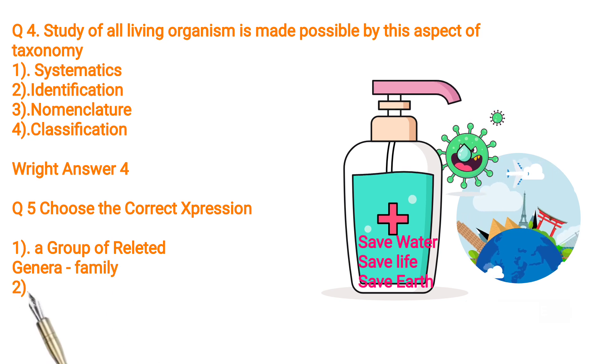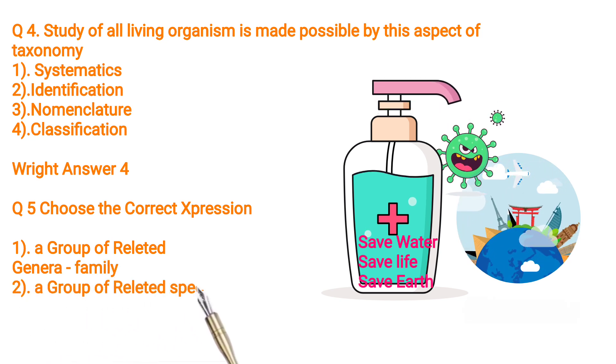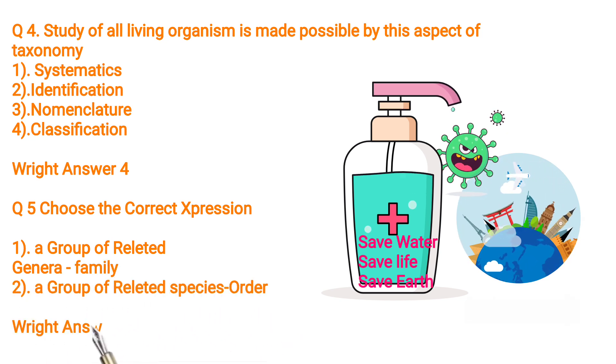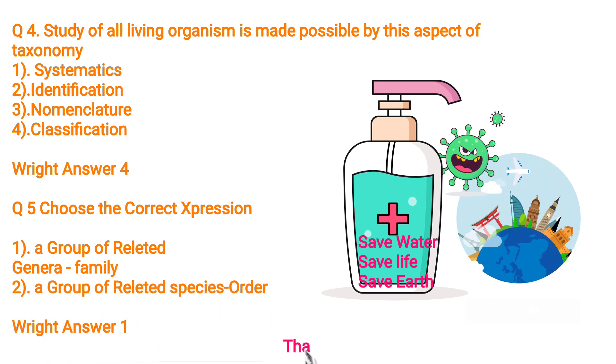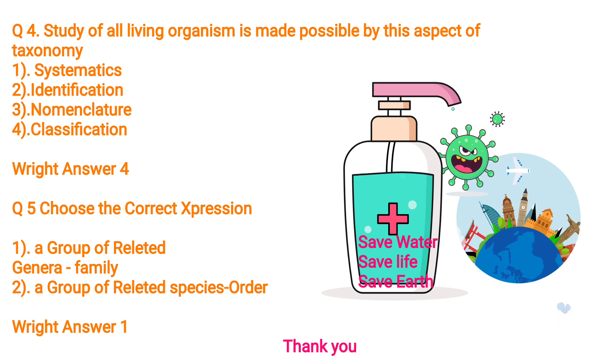Right answer: 4. Q5: Choose the correct expression — 1. A group of related genera is a family. 2. A group of related species is an order. Right answer: 1. Thank you.